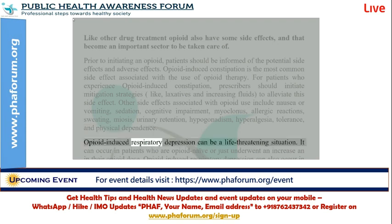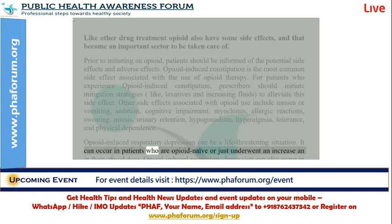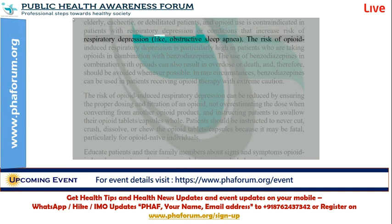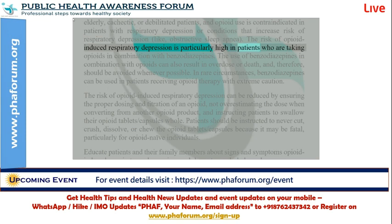Opioid-induced respiratory depression can be a life-threatening situation. It can occur in patients who are opioid naive or who just underwent an increase in their opioid dose. It can also occur in elderly, cachectic, or debilitated patients. Opioid use is contraindicated in patients with respiratory depression or conditions that increase risk of respiratory depression, like obstructive sleep apnea. The risk is particularly high in patients who are taking opioids in combination with benzodiazepines.